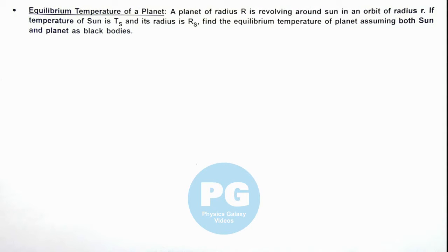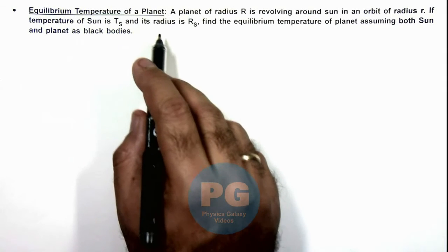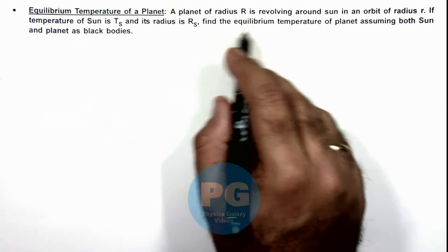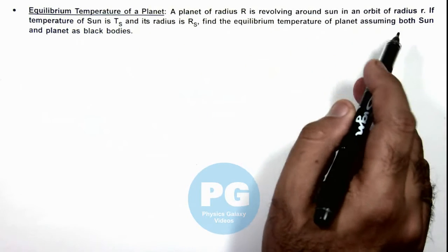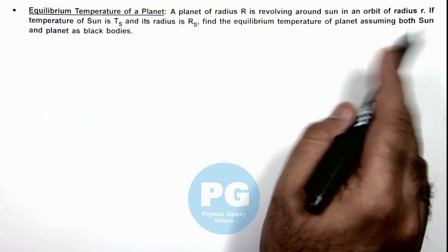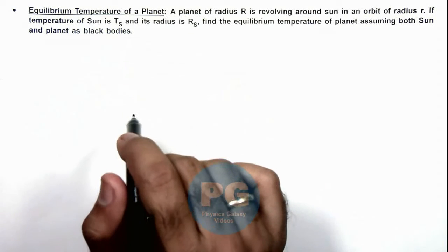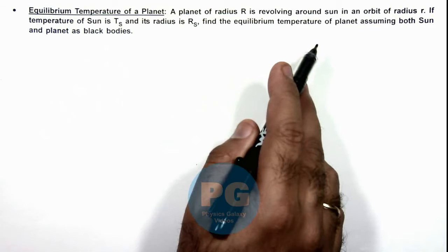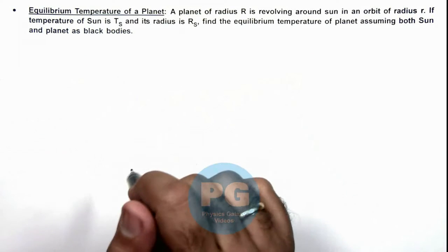In this illustration, we'll be analyzing the equilibrium temperature of a planet. We are given that a planet of radius r is revolving around the sun in an orbit of radius R. The temperature of the sun is Ts and its radius is Rs. We are required to find the equilibrium temperature of the planet, assuming both the sun and planet as black bodies.